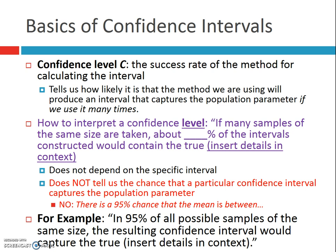To interpret a particular confidence level, you could say: if many samples of the same size are taken, about whatever percent of the intervals constructed would contain the true population proportion of teens who own cell phones, or the true population mean of the average number of dogs per household — lots of different things. You can interpret a confidence level without actually knowing the interval. Please note: this is NOT a probability. It's not telling us the chance that the interval will contain the true population parameter. It's not 'there's a 95% chance.' If you were to do this many times, about that percent of the intervals would contain it.